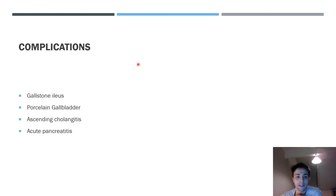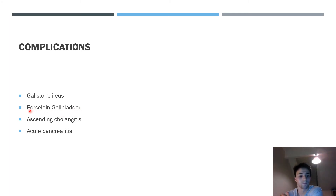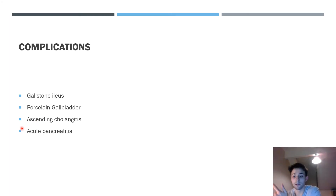There are several complications that can arise from gallstones. These include gallstone ileus, porcelain gallbladder from chronic cholecystitis, ascending cholangitis (infection of the biliary tree), and acute pancreatitis — which can result both from the gallstone itself and from ERCP as a treatment.